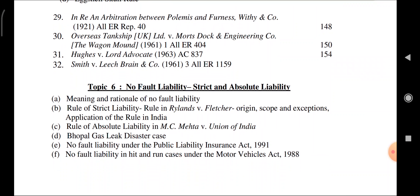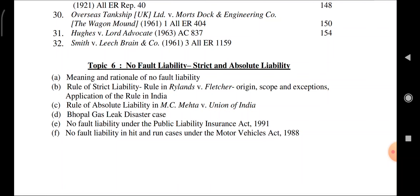Topic 6: No Fault Liability — Strict and Absolute Liability. The concept of strict liability also arises in criminal law regarding mens rea. Meaning and rationale of no fault liability. Rule in Rylands vs. Fletcher (UK case) — origin, scope, exceptions, and application in India. Rules of absolute liability in MC Mehta vs. Union of India — the Bhopal gas leak disaster case. No fault liability under the Public Liability Insurance Act 1991, and no fault liability in hit-and-run cases under the Motor Vehicles Act 1988.